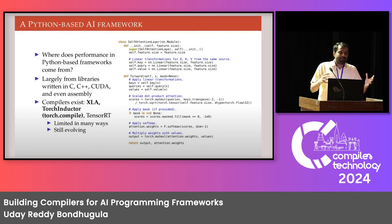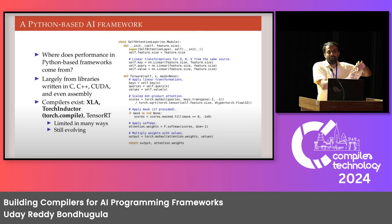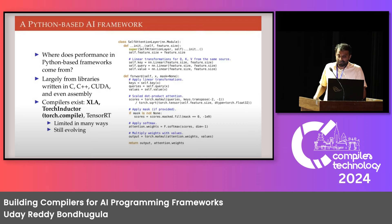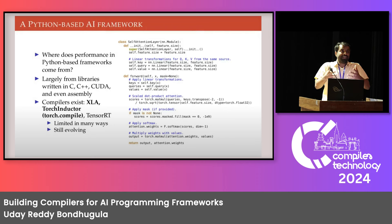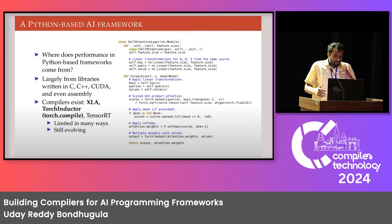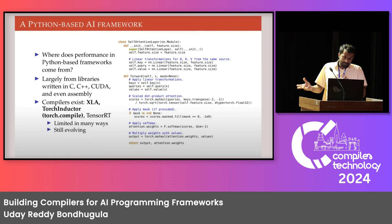There are two major production-level compilers in this space: XLA and Torch Inductor. But they have limitations on what they can do with this kind of code, and compilers in this space are still evolving and limited in many ways. If compilers aren't available, people take the whole specification and write hand-optimized low-level code in CUDA, etc.